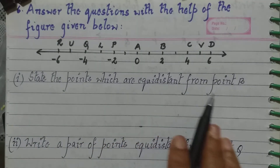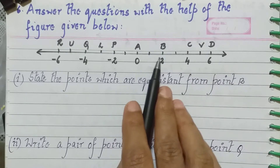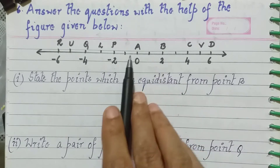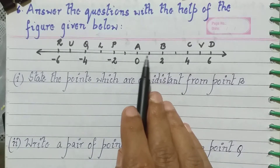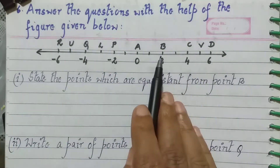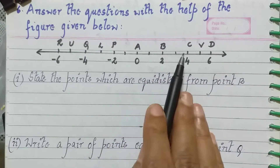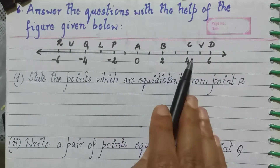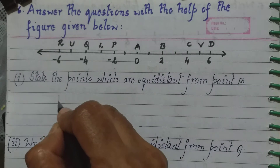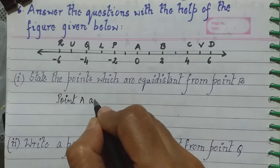The first question: state the points which are equidistant from point B. When we say equidistant, the distance between them should be the same from point B. From B, you see that A is at a distance of two units, and C is also at a distance of two units. So point A and point C are equidistant from point B.